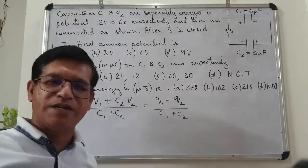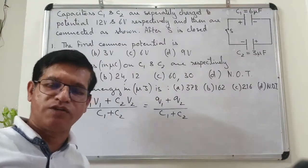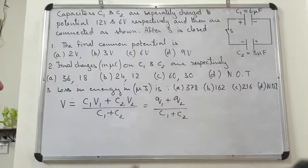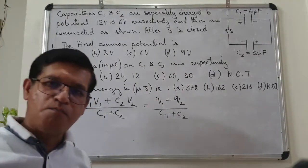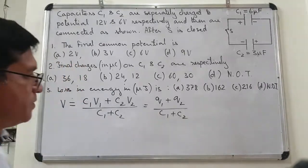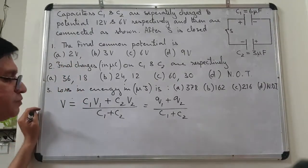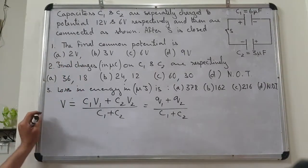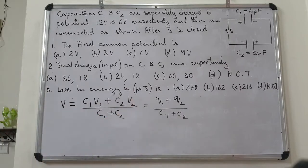Capacitance के साथ कोई problem नहीं है — capacitance हमेशा positive होती है। तो चलो इस formula को इस problem पर apply करते हैं और common potential V निकालते हैं।